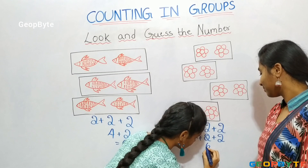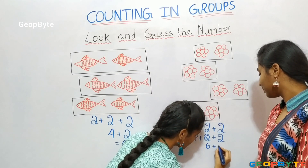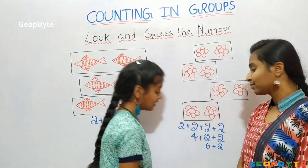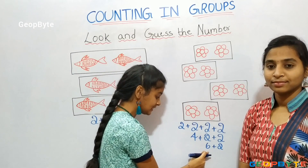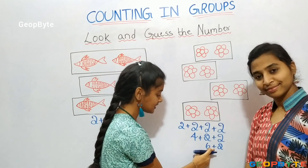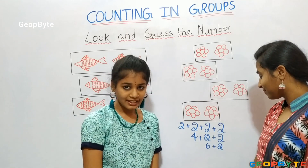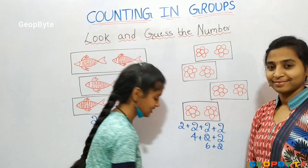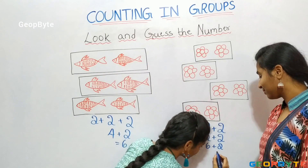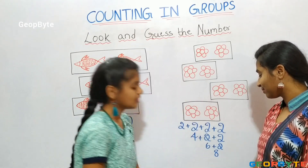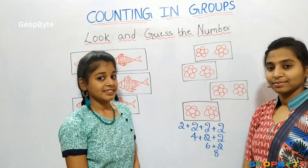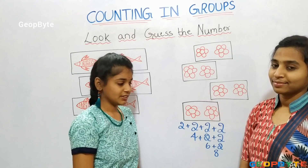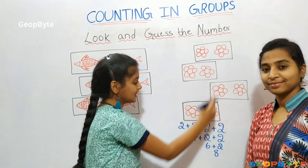2 plus 2 plus 2 is equal to 8. So there are 8 flowers on this side.